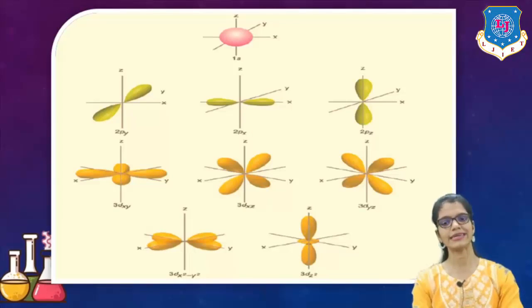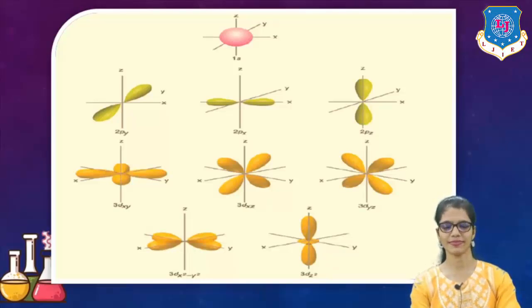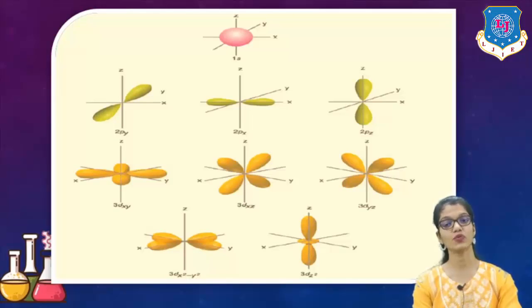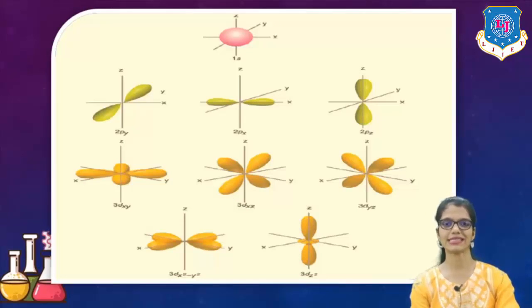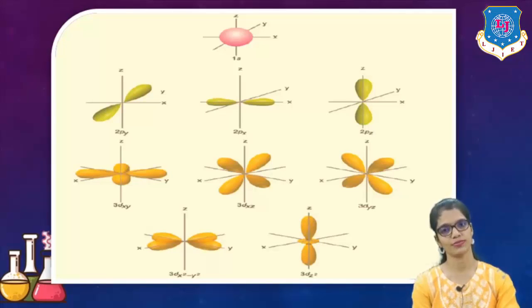Number one: DXY. Number two: DXZ. Number three: DYZ. Number four: DX squared minus Y squared. And the last one: DZ squared. Now, total five different kinds of orbitals are involved. So maximum number of electrons which are possible here are 10. 5 into 2, so maximum number of electrons are 10, not more than that can be possible.